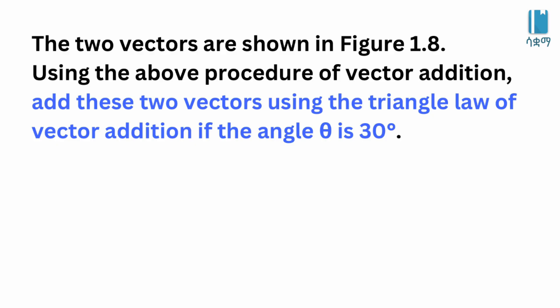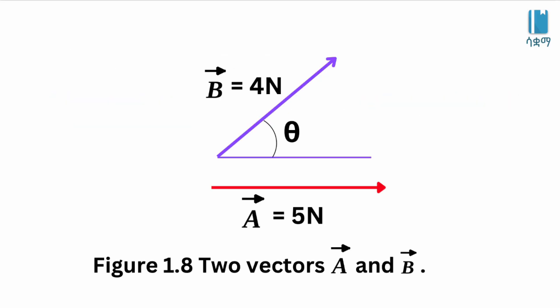We will solve this using the triangle method. The angle theta is 30 degrees. Vector A is drawn along the positive x-direction, which is east. Then vector B is placed at 30 degrees from the positive x-axis, or horizontal. This is set up along the positive x and positive y directions.